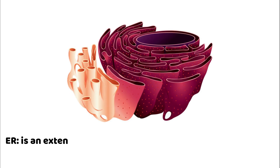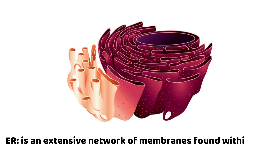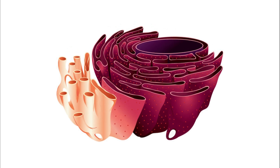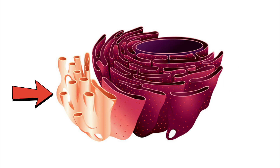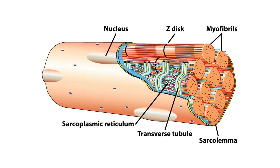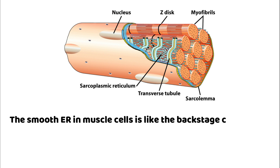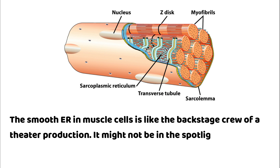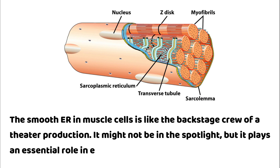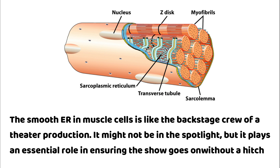Anatomy of the endoplasmic reticulum. The endoplasmic reticulum is an extensive network of membranes found within cells. It comes in two varieties: rough endoplasmic reticulum and smooth endoplasmic reticulum. In muscle cells, we're particularly interested in the smooth ER, which lacks ribosomes on its surface. The smooth ER in muscle cells is like the backstage crew of a theater production — it might not be in the spotlight, but it plays an essential role in ensuring the show goes on without a hitch.